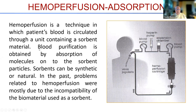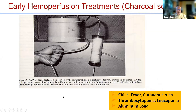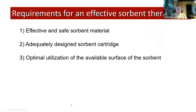Hemoperfusion is a very simple technique where blood is circulated through a device containing the sorbent, which can be synthetic or natural. At the beginning, it was common to see chills, fevers, cutaneous rash, thrombocytopenia, leucopenia, and aluminum load. In fact, biocompatibility was an important issue.